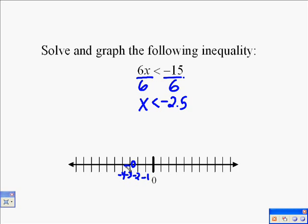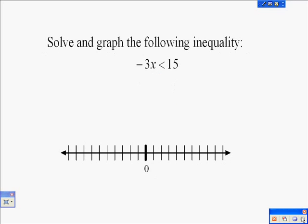So we have to graph it. It's going to be an open circle because it's not equal to, it's just less than. And then, as you can see, I just estimated between negative 2 and negative 3 where to put it. And it's all to the left because those are the numbers less than negative 2.5.